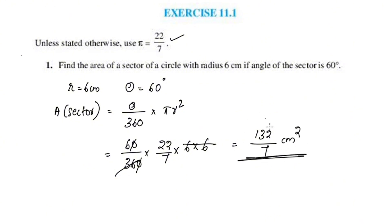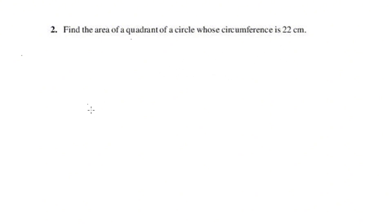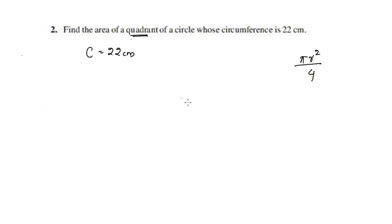When you mark the area of a circle, mark your 7 as well. The second question is: find the area of a quadrant of a circle whose circumference is 22 centimeters. If circumference C is 22 centimeters — we have not been given the radius, we have been given the circumference of 22 centimeters. What is the radius of the circle?